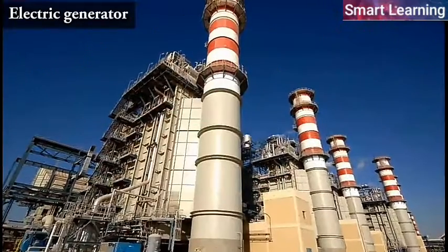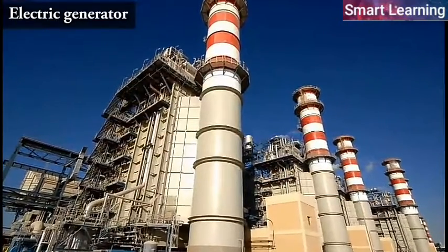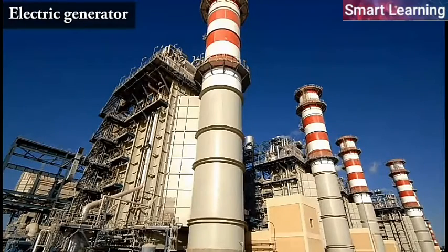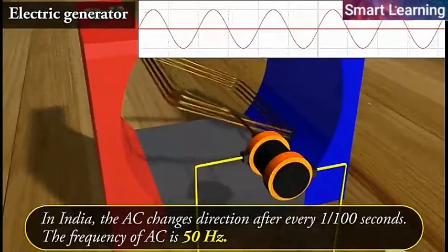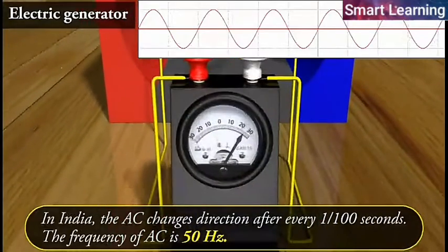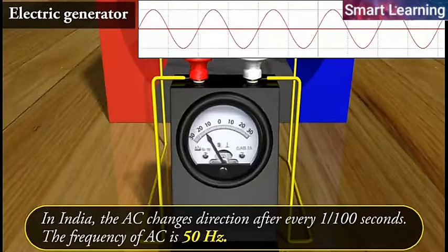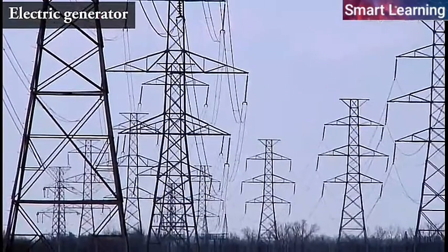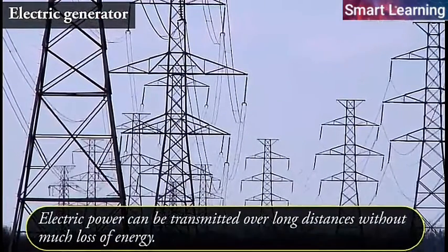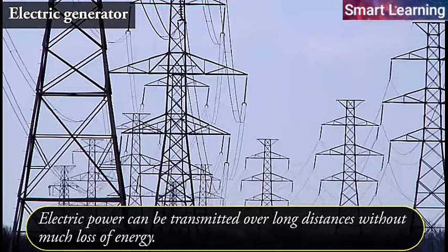Most power stations constructed these days produce AC. In India, the AC changes direction after every 1 upon 100 seconds, that is, the frequency of AC is 50 Hertz. An important advantage of AC over DC is that electric power can be transmitted over long distances without much loss of energy.